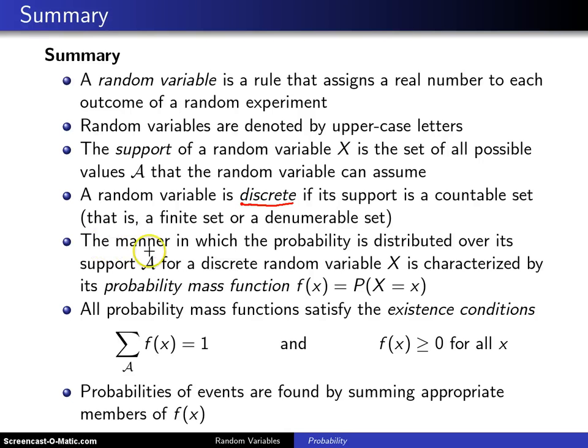The manner in which the probability is distributed, and that's how you get the term probability distribution, over its support script A for a discrete random variable x is characterized by its probability mass function. And generally speaking, most authors will use f of x for that probability mass function,